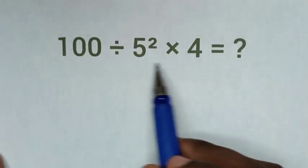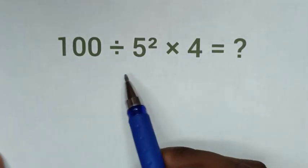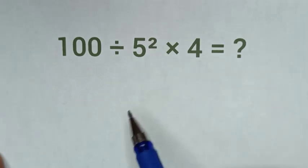Hello, how to solve this math problem? 100 divided by 5 square times 4.